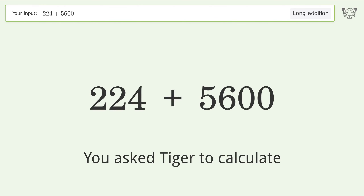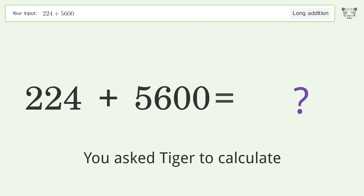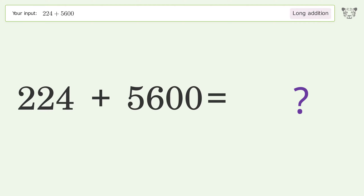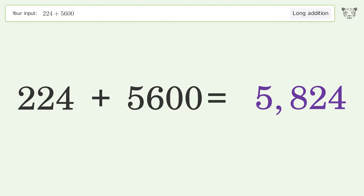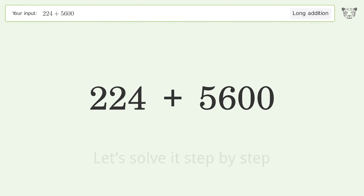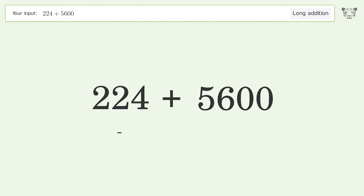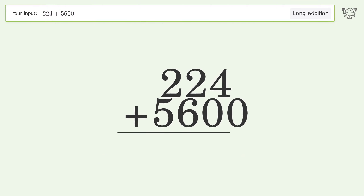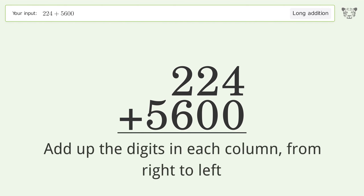You asked Tiger to calculate. This deals with long addition — the final result is 5824. Let's solve it step by step. Rewrite the numbers from top to bottom, aligned by their place values, then add up the digits in each column from right to left.